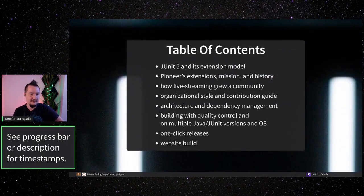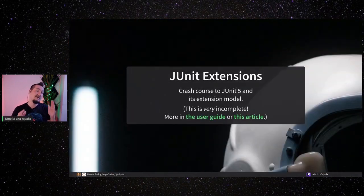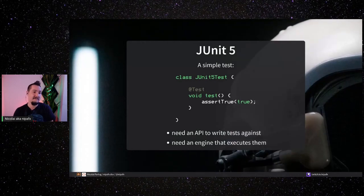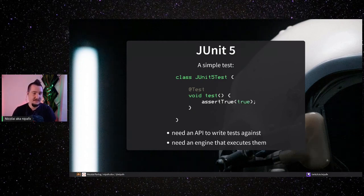Let's start with JUnit 5 extensions in general — a crash course on JUnit 5 and its extension model. Please note this is very incomplete, just the crashiest of crash courses. This is what a simple JUnit 5 test looks like: you have a class with a test class name, the body contains one method annotated with the test annotation, which doesn't need to be public. There's a simple assertion. Very straightforward — that's the simplest test you can probably write.